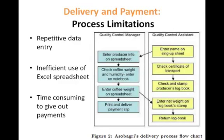This flowchart details the process of how farmers deliver coffee and receive appropriate payment during the harvesting season. Each farmer is registered in a paper notebook by a quality control assistant, then the manager enters the information into an Excel spreadsheet and checks for coffee weight and humidity. The information is also recorded by hand into the producer's logbook, and the net price to be paid is decided. The authors called this the most inefficient and business-limiting procedure at Azobagri, as the delivery and payment process can take up to three hours per farmer.